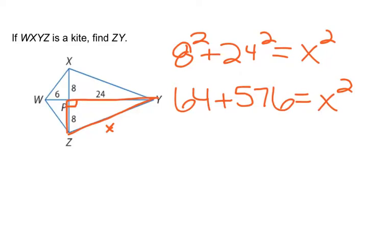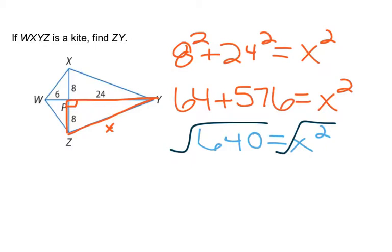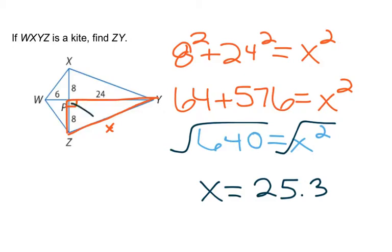Adding those together: 640 = x². To solve, take the square root. The square root of 640, to the nearest tenth, is 25.3. So the diagonals are perpendicular, creating a right triangle. Knowing two sides, you use the Pythagorean theorem — leg² + leg² = hypotenuse² — where the hypotenuse is opposite the right angle.